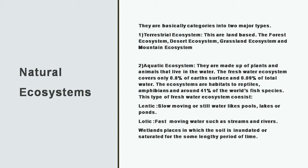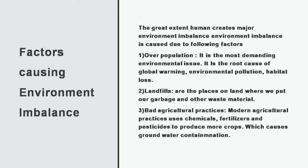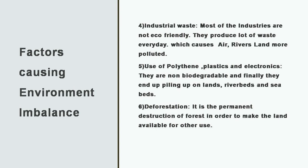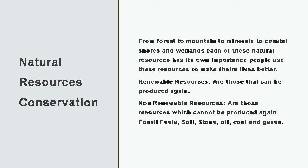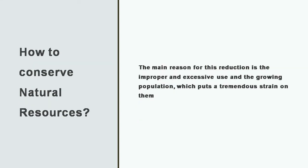Natural ecosystem is categorized into terrestrial and aquatic. Terrestrial means land-based, so forest, desert, grassland, and mountains form the terrestrial ecosystem. Water ecosystem consists of freshwater and marine water. Freshwater ecosystem covers 0.8% of the earth. It consists of lentic, that is slow-moving or still water like pools, lakes or ponds, and lotic — fast-moving water such as streams and rivers.